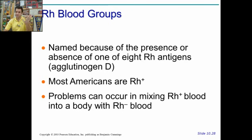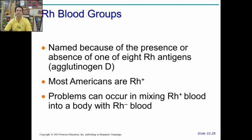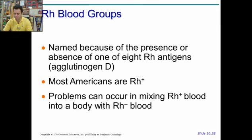Then there's also the RH groups, named because of the RH antigens. RH stands for rhesus, like rhesus monkeys. They also call it agglutinogen D. Most of you are RH positive. The highest percentage blood type in the United States is actually O positive — I'm O positive. I think about 40% of the population is O positive, but there's something very interesting in pregnancy.